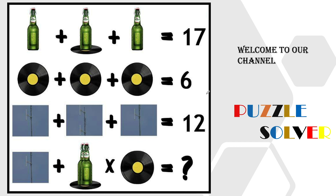The puzzle we're going to solve in this video is the beer bottle, CD, and electric supply puzzle. We have three items: a beer bottle, a CD, and an electric supply. We have to find the value of every item so we can find the value of the last equation.